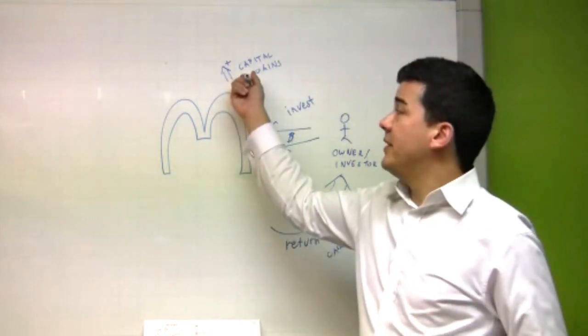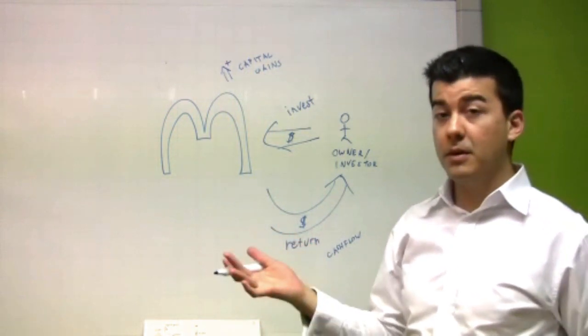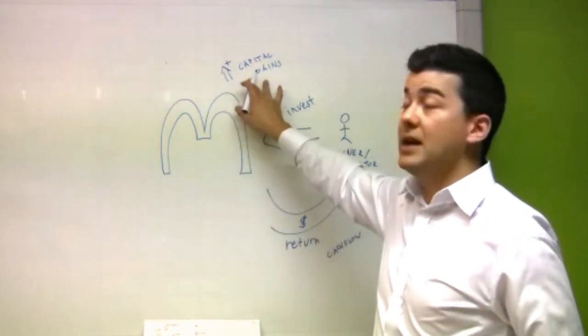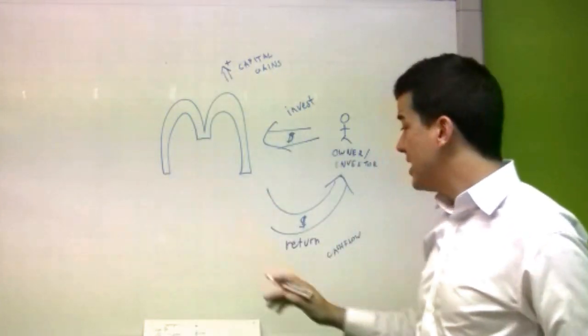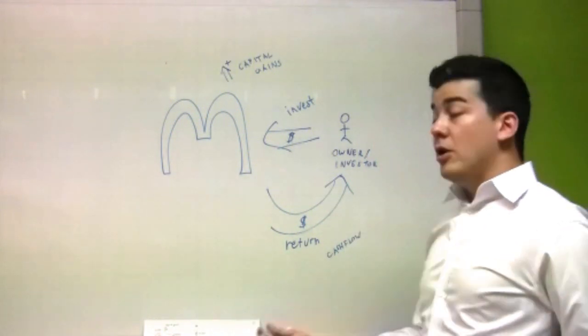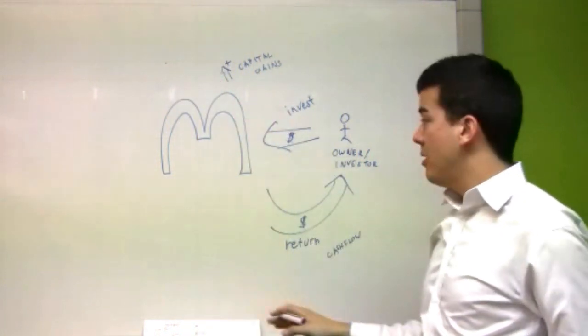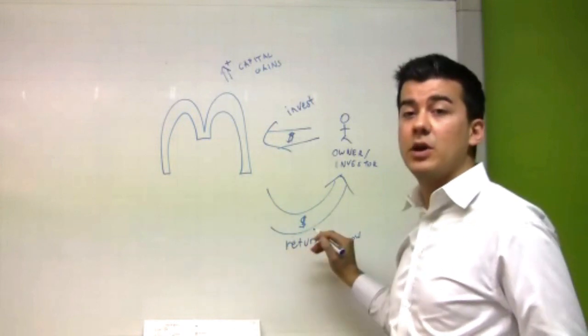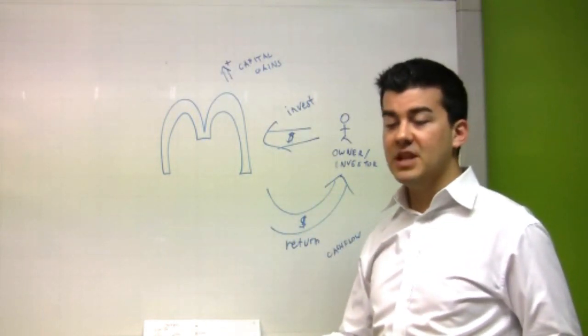Now, in the gold example, they're expecting capital gains. They're expecting the value of the gold to go up due to the market and therefore make gain on their capital, on their investment. Now, for the example of a car park, although the car park may actually rise in capital gains, what the investor is interested in is a regular paycheck, a cash flow, the rental from the car park.